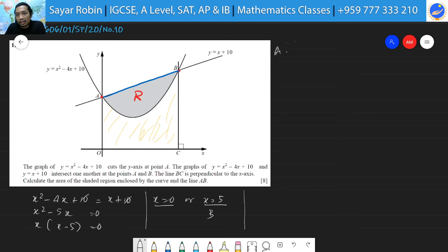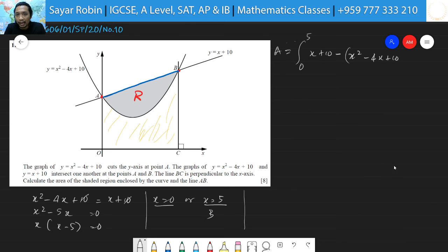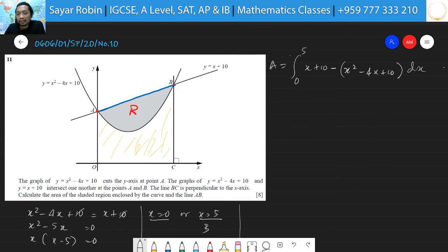Lower limit is 0, upper limit is 5. And then, line equation is x plus 10 minus quadratic equation is x squared minus 4x plus 10. Never forget to use the parenthesis. Otherwise, this means another way. This is going to be the easiest way to get the answer quickly. So, 0 to 5, x plus 10 minus x squared plus 4x minus 10 dx. 0 to 5 and then negative x squared is going to be first and positive 4x is going to be 5x. The positive term and negative term must be deleted, giving us negative x squared plus 5x dx.